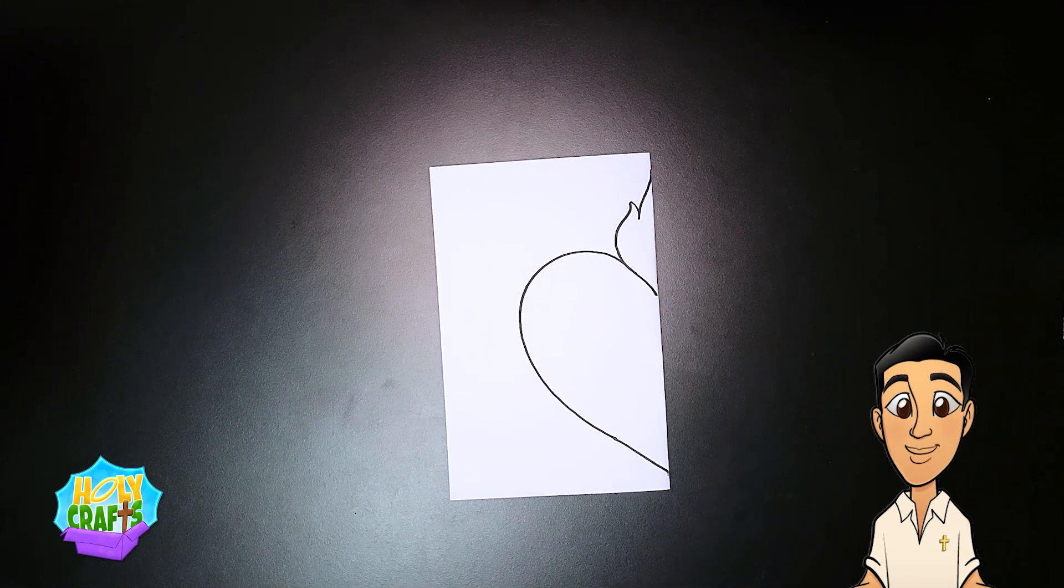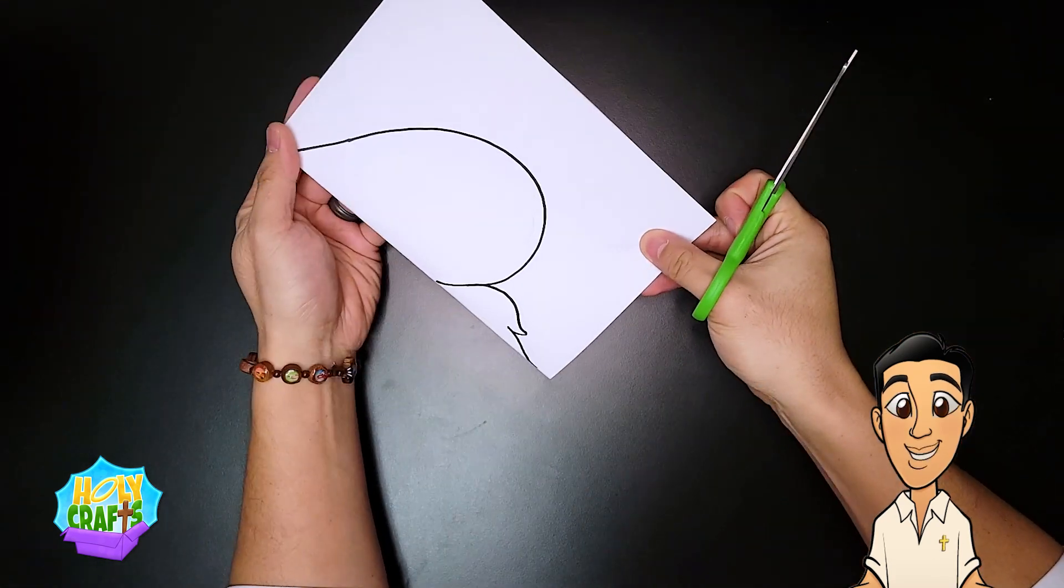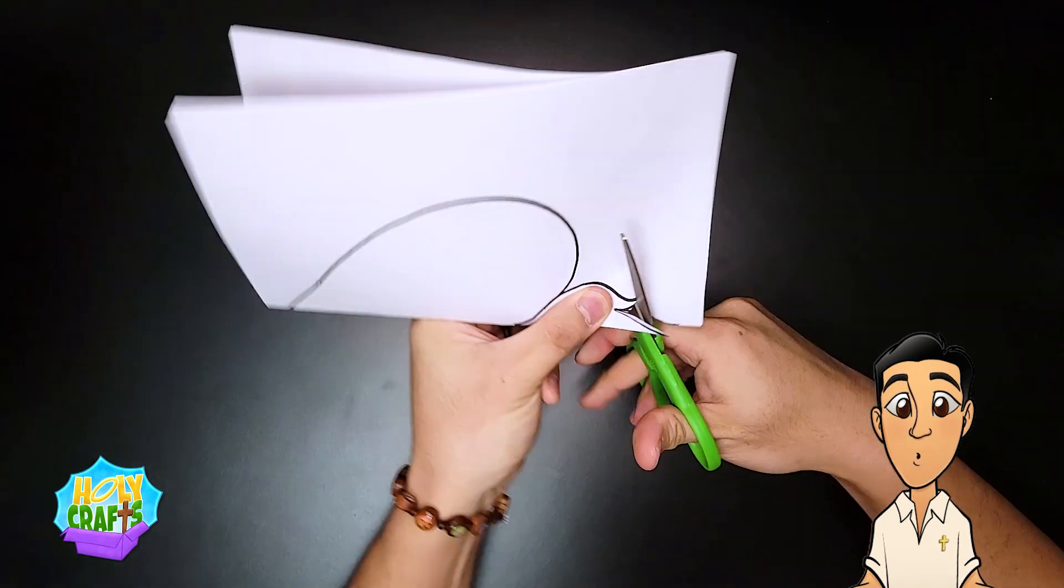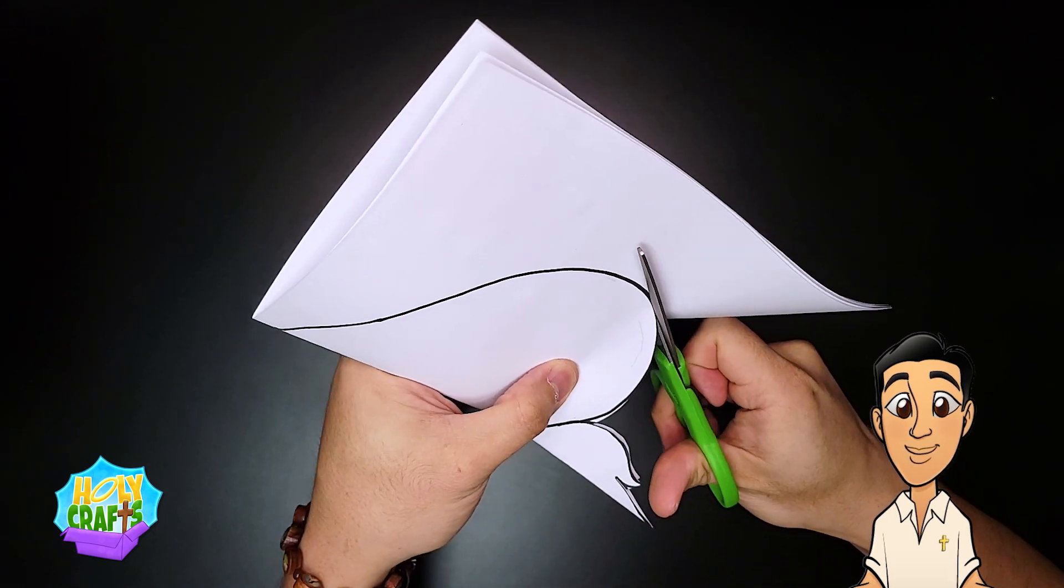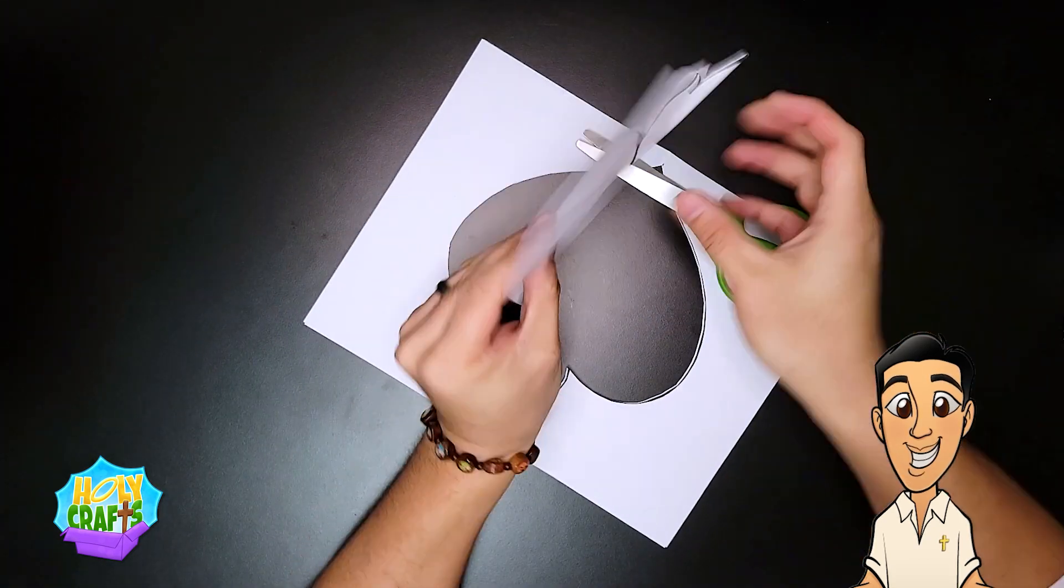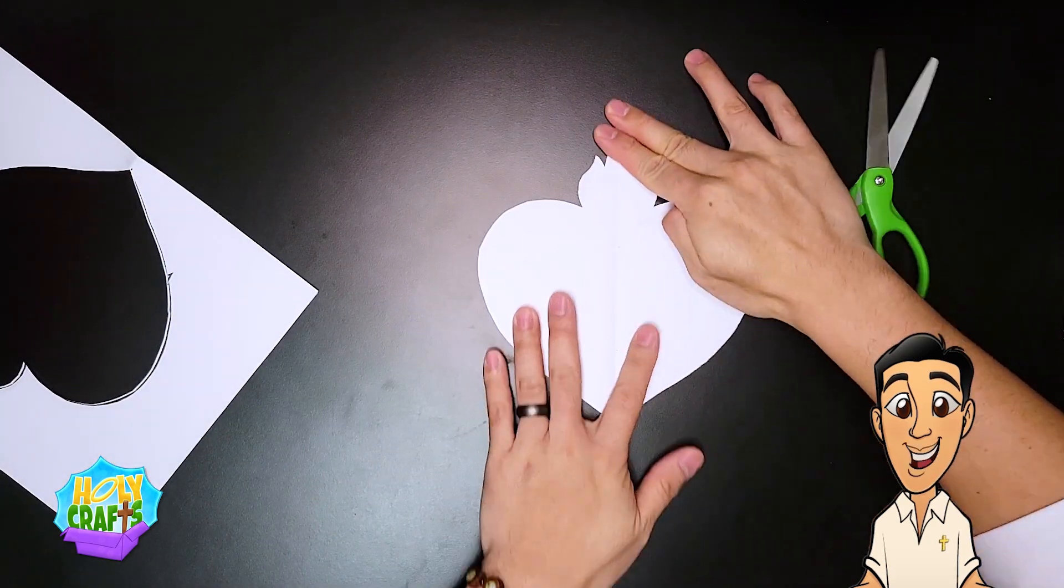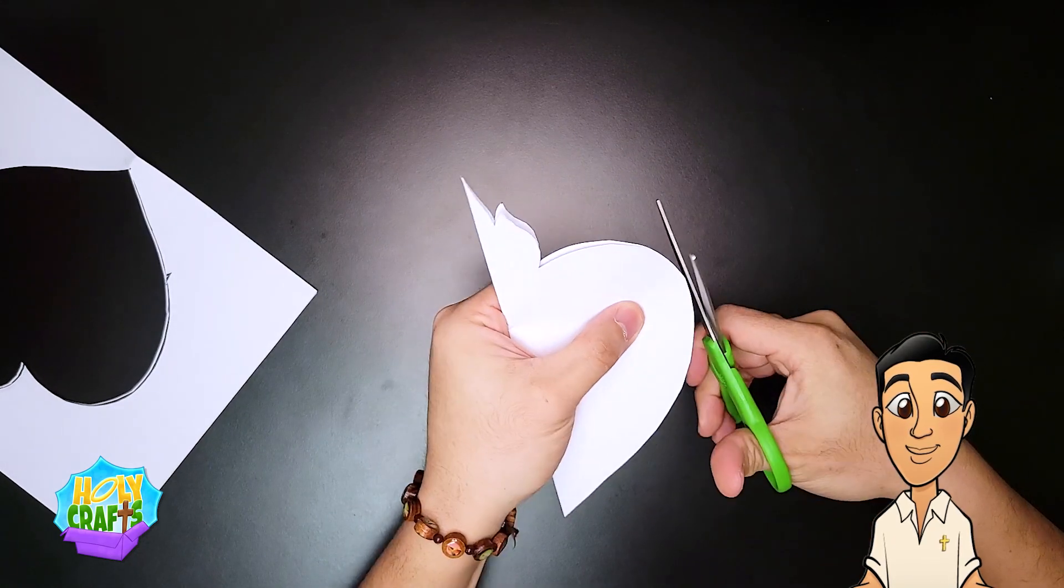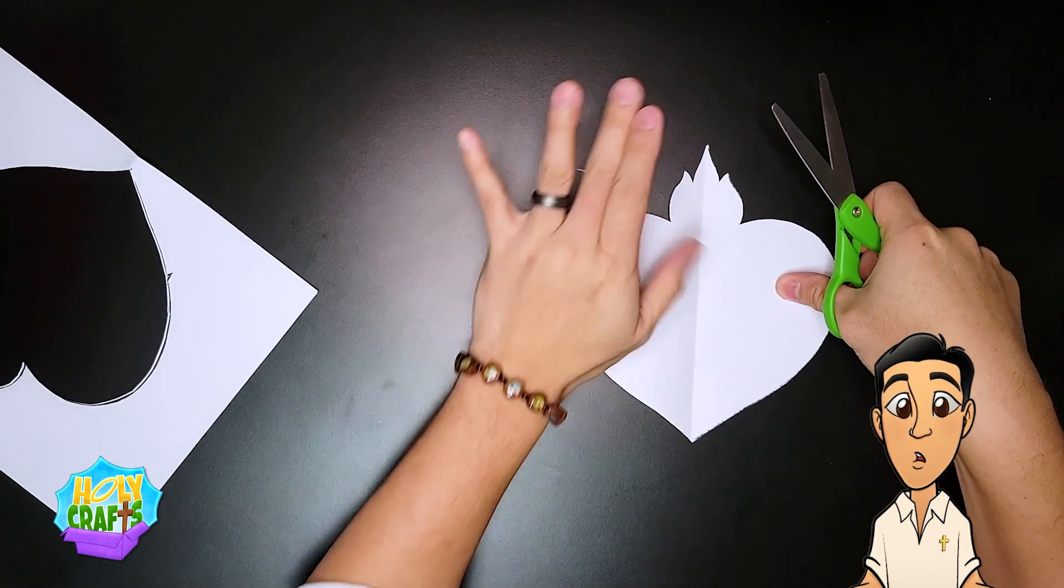Now we're going to take our scissors, and we're going to cut both pieces of paper, so make sure they're nice and lined up. We're going to cut right in the middle. Make sure it's folded. All right, I'm going to cut out the whole piece, everything that I drew. Go all the way around the heart.